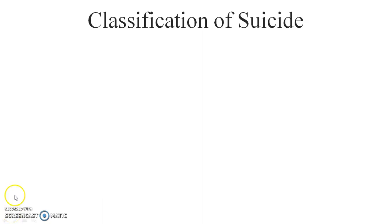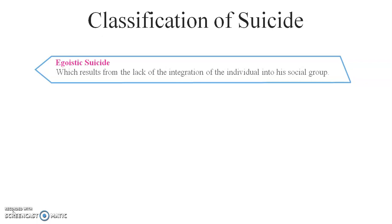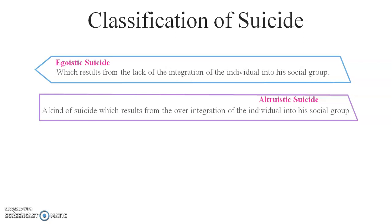The first type is egoistic suicide, which results from the lack of integration of the individual into their social group. The second type is altruistic suicide, which results from excessive integration, where individuals sacrifice themselves for the group. Examples include the death of soldiers during war, suicide bombers, and the practice of sati.